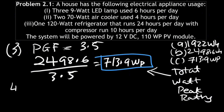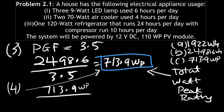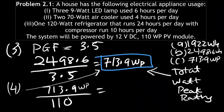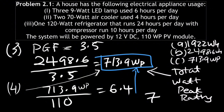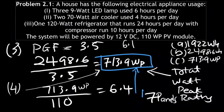For the final step, we take the total watt peak rating of 713.9 and divide it by the watt peak given in the question, which is 110. This gives approximately 6.4. Whenever you get a decimal like 6.4, round it up to the next whole number, which is 7. Even if you get 6.1, you take 7. So the final answer is 7 panels needed.